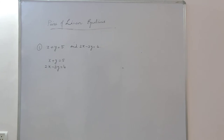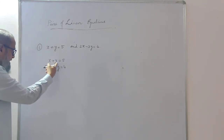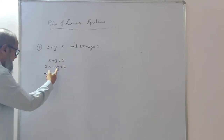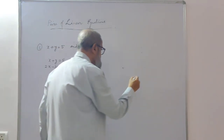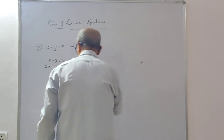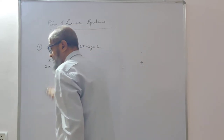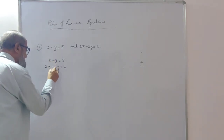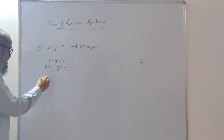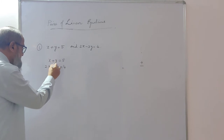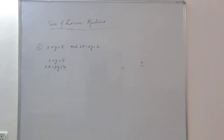Here, y has a plus sign in one equation and a minus sign in the other. When they have different signs, we can eliminate y by adding, provided the coefficients are the same. The coefficient is 1y here and 3y there. To make them both 3, I will multiply the first equation by 3 and the second by 1. Multiplying the first equation by 3 gives 3x plus 3y is equal to 15.